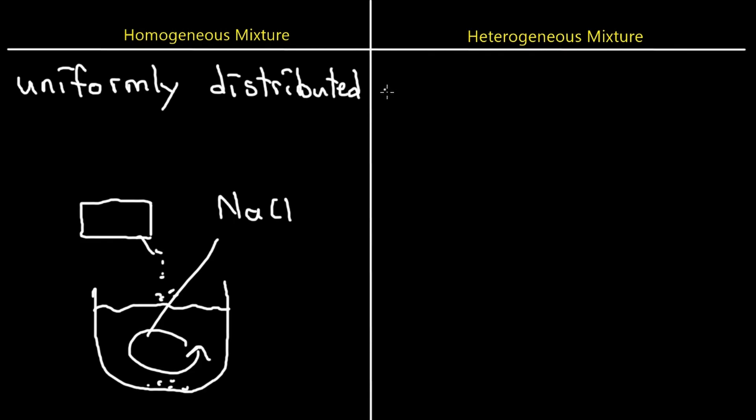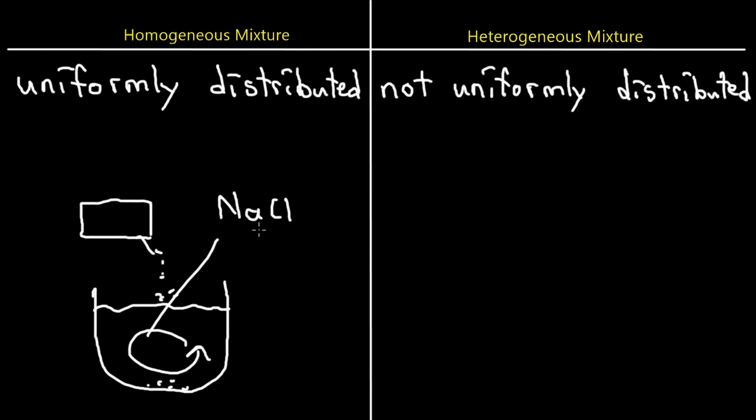A heterogeneous mixture is the opposite — not uniformly distributed. Other examples of homogeneous mixtures include air, which is made up of nitrogen, oxygen, carbon dioxide, and other gases. The proportionality is universal throughout — whether you take air from one part of a room or another, it has the same concentrations. Blood is also a common example: it generally has the same types of compounds and the same distribution throughout your body system.